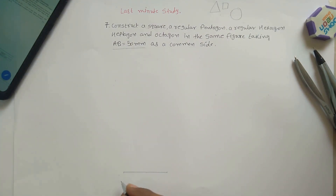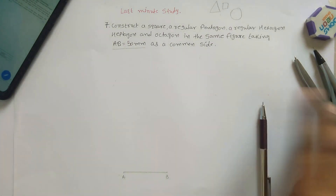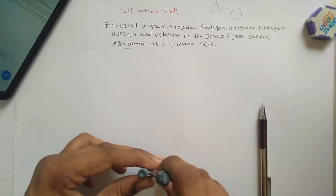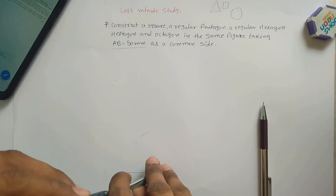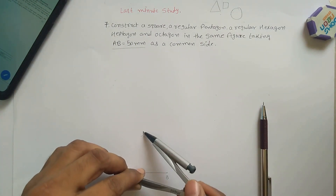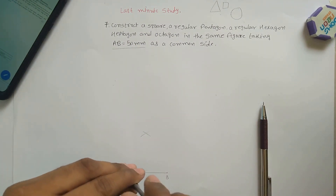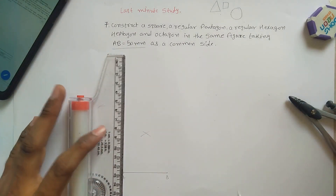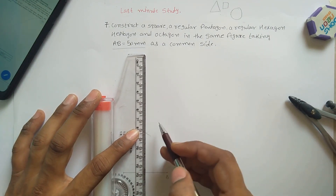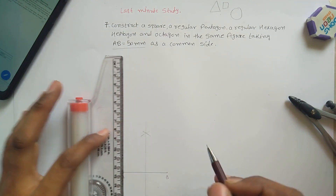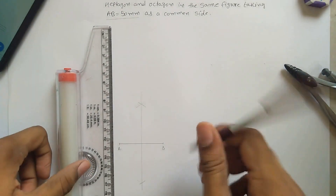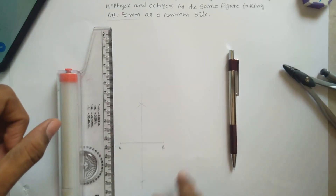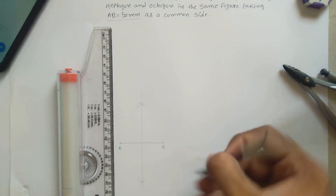This distance AB is 50 mm. Next, bisect this line. To bisect, measure the distance, draw arcs above and below the line, and find the intersecting points above and below, then join them. This gives your midpoint line. These are construction lines, so they must be drawn as thin lines — that is the rule to follow.